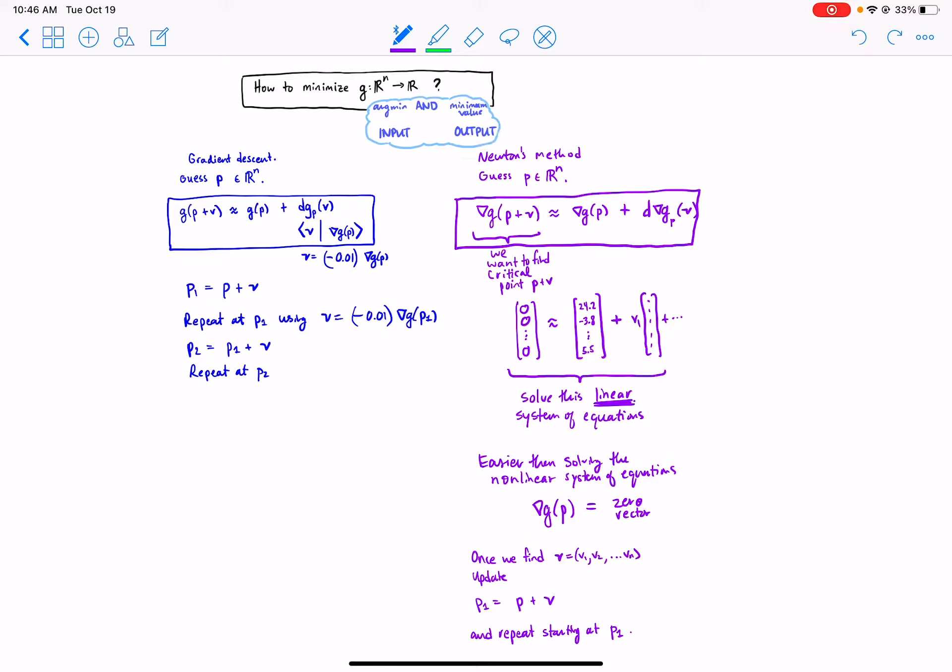Two ways to do this: gradient descent is the first way and it starts by guessing at a point and producing some new points P1, P2, P3, P4, and it'll keep going. Newton's method also starts by guessing a point and it'll produce some new points P1, P2, P3, P4, etc. Newton's method works much better but it